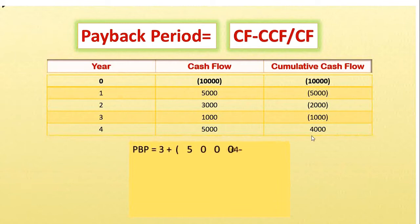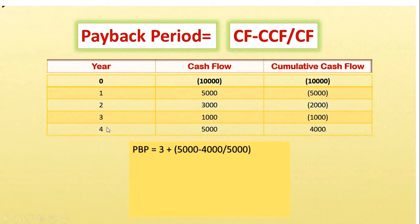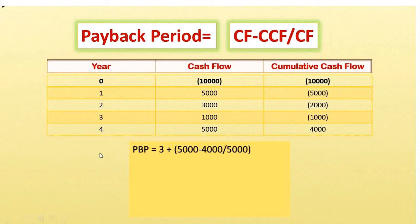In year four we have got back a positive amount, but in year three the CCF is still negative. That means it takes the whole of year three but not the whole of year four — so in three years and a few months we will get back the amount. But how many months into year four? We need to calculate that. We take the whole three years, and now we must calculate how many months into year four it will take to recover the investment.